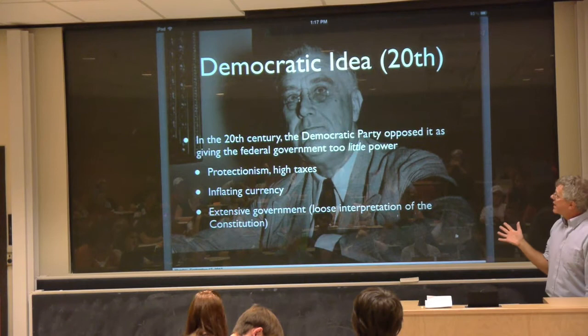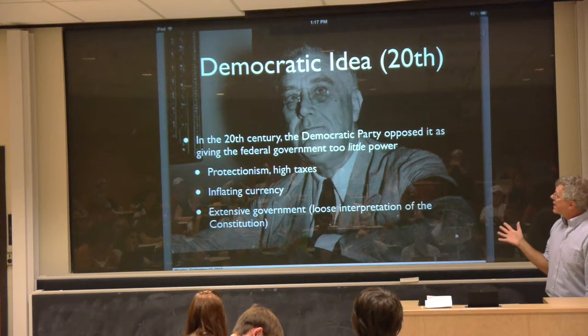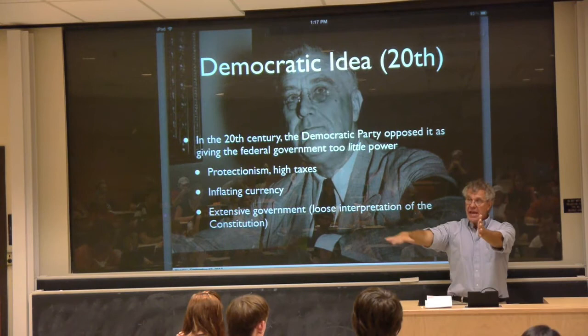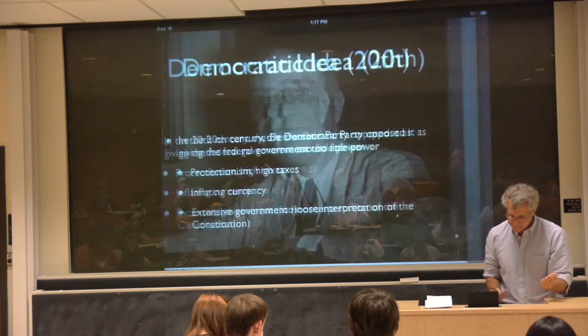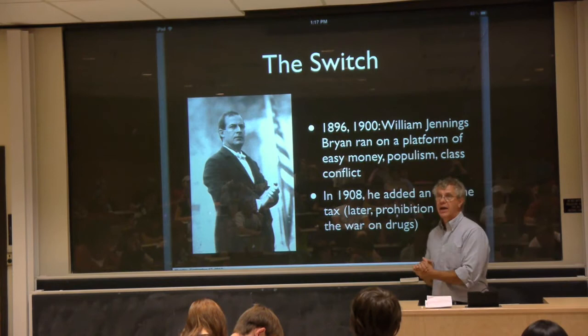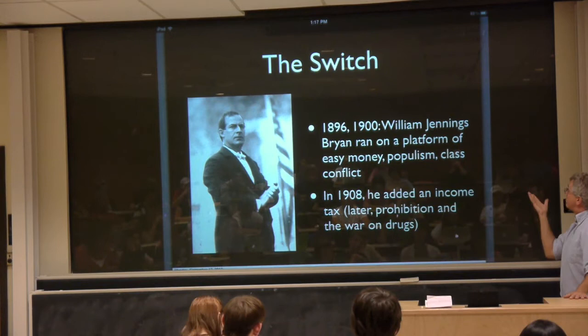Roughly speaking, the Democratic Party leaped over the Republican Party. It used to be clearly to the right of the Republican Party, and then it jumped over to be significantly to the left. The switch came about largely as the result of William Jennings Bryan — the person who ran for president three times and lost every time. He ran on a platform quite different from the Democrats before him: one based on easy money, getting away from the gold standard, populism, and class conflict.